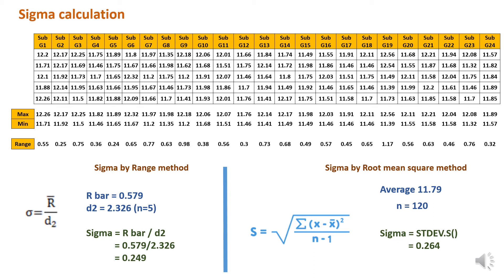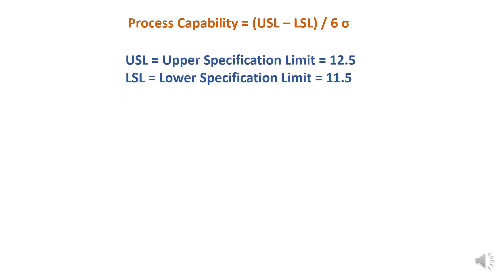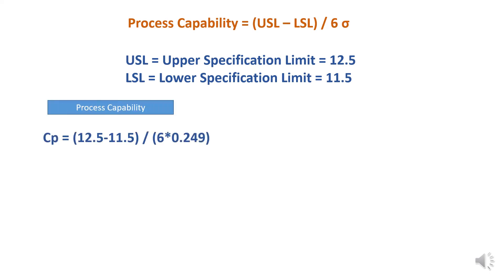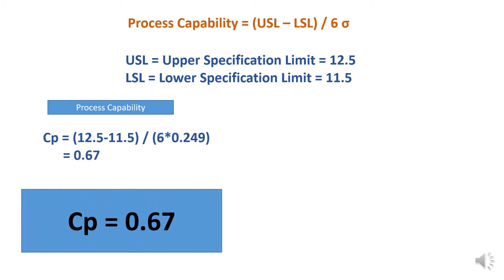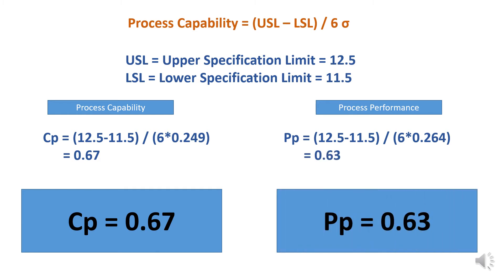Now we have sigma from the range method as well as sigma from the root mean square method. We can now calculate process capability and process performance. We have USL of 12.5 and LSL of 11.5 as per customer requirement. The Cp formula is USL minus LSL divided by 6 sigma, using sigma of 0.249 from the range method — so Cp equals 0.64. For Pp, the same formula is used but with sigma of 0.264 from the root mean square method, giving Pp equals 0.663.